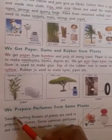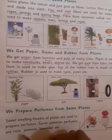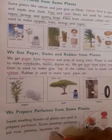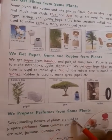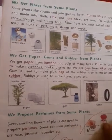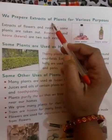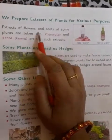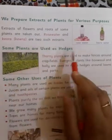We also prepare perfume from some plants. Sweet-smelling flowers or plants are used to prepare perfumes. Some common perfume sources are rose, jasmine, lavender, etc. We also prepare extracts of plants for various purposes. Extracts of flowers and roots of some plants are taken out; rose water and kevra are two such extracts.